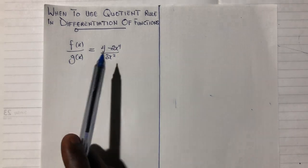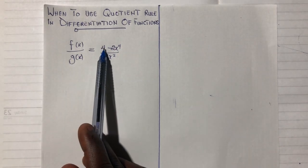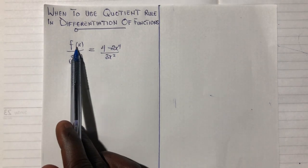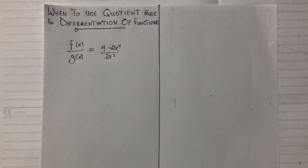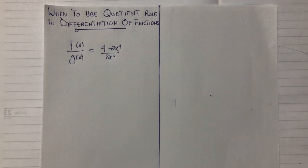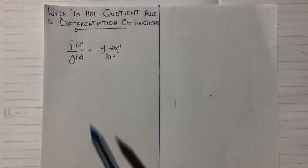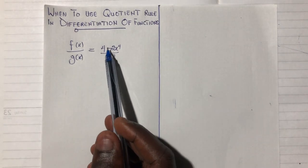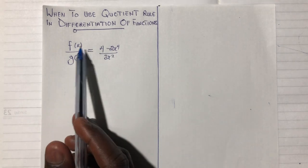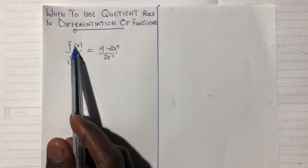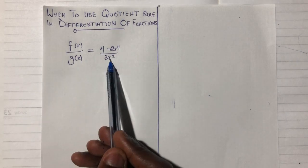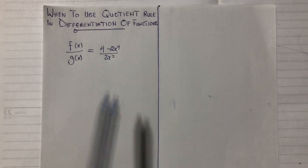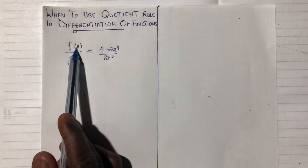We must make sure that the first function f(x) and the next function g(x) are two separate functions on their own. In this video, I will be ignoring f(x) and g(x) and will be using u and v as the names to represent the numerator function and the denominator function.